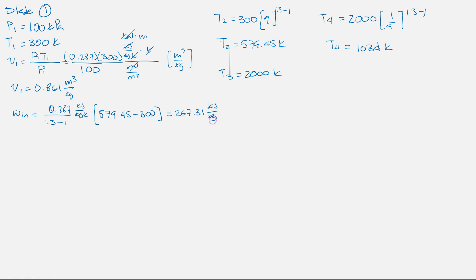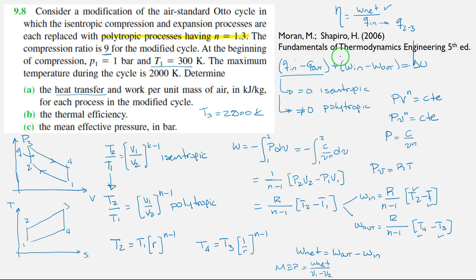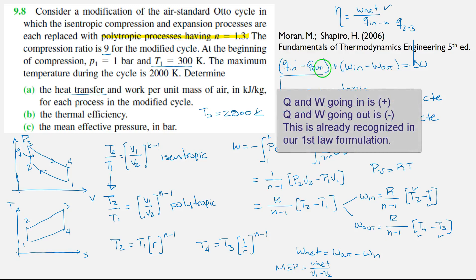So if we substitute into our work expressions, we can compute work-in in kilojoules per kilogram. Notice that in our nomenclature, everything that goes in is positive and everything that goes out is negative. So work-in has a positive sign. Work-out is negative because it is going out.